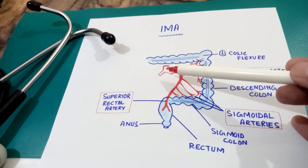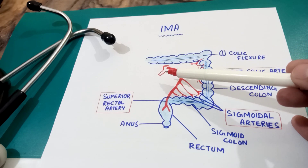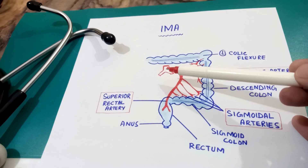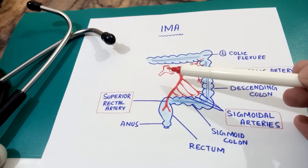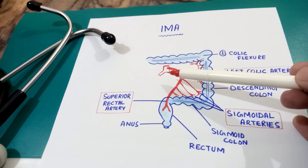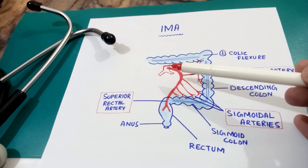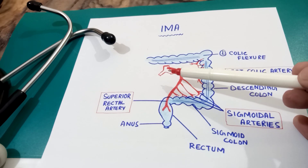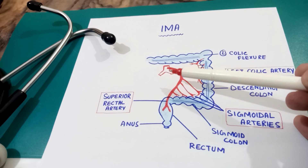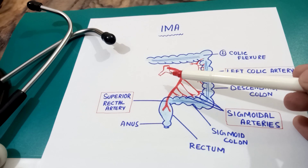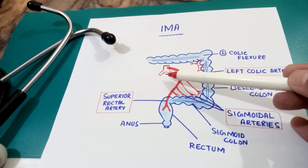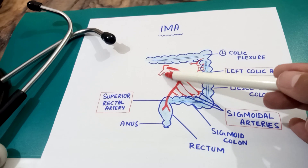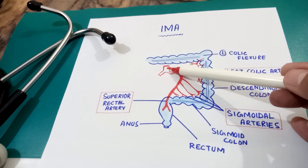If we talk about the origin of the inferior mesenteric artery, it arises from the anterior side of the abdominal aorta at the level of L3. As you know, the celiac trunk arises at T12, the superior mesenteric artery arises at L1, while the inferior mesenteric artery arises at the level of L3.